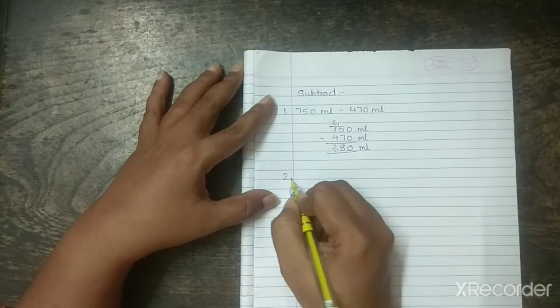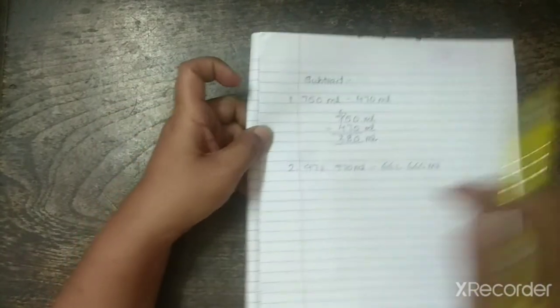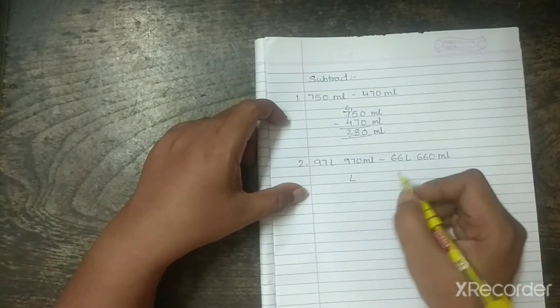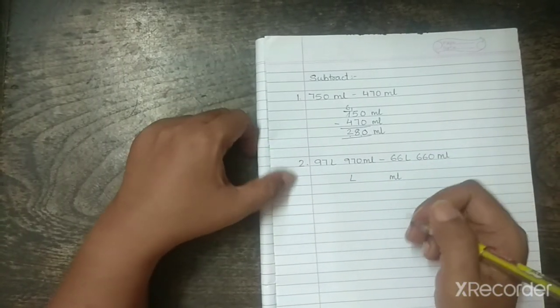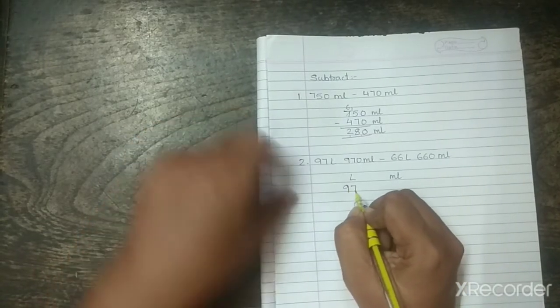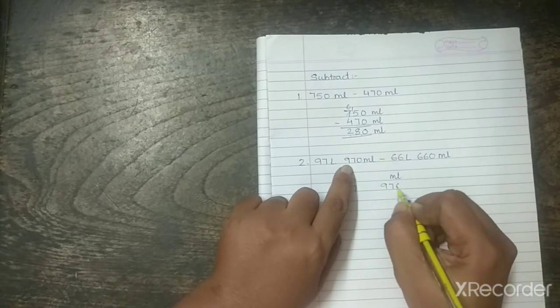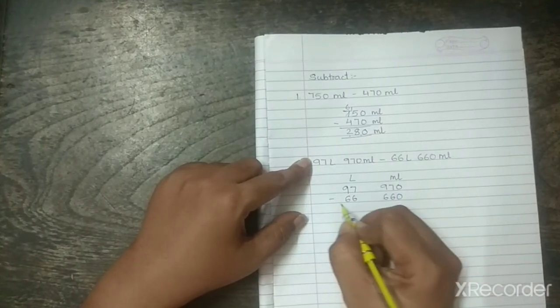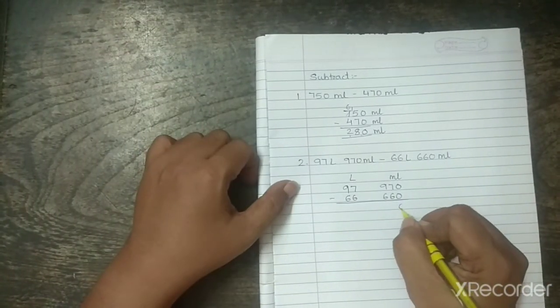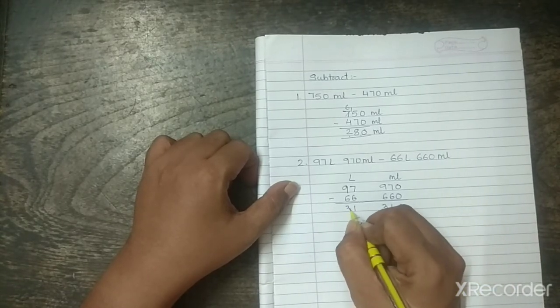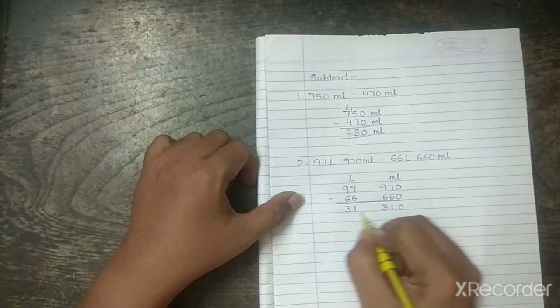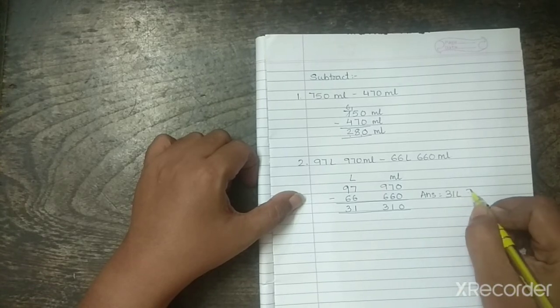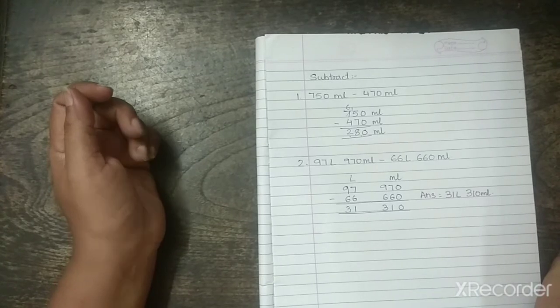Now, we will solve another sum. Now, this is a mixed number. You have liters and milliliters. Donoh hai ismeh. So, again, we will write liters and milliliters. Jaise hamne addition meh likha tha. Liters ke neiche nahi liters aayenge. This is 97 liters. 970 ml, 66 liters and 660 milliliters. Now, the usual subtraction. So, the answer is 31 liters and 310 milliliters.